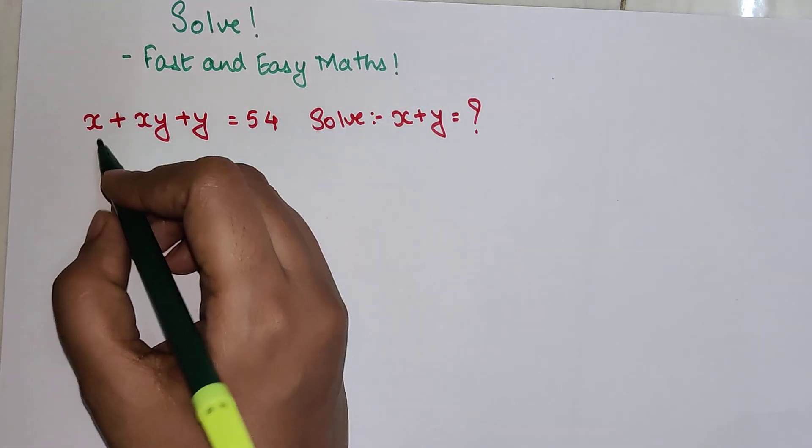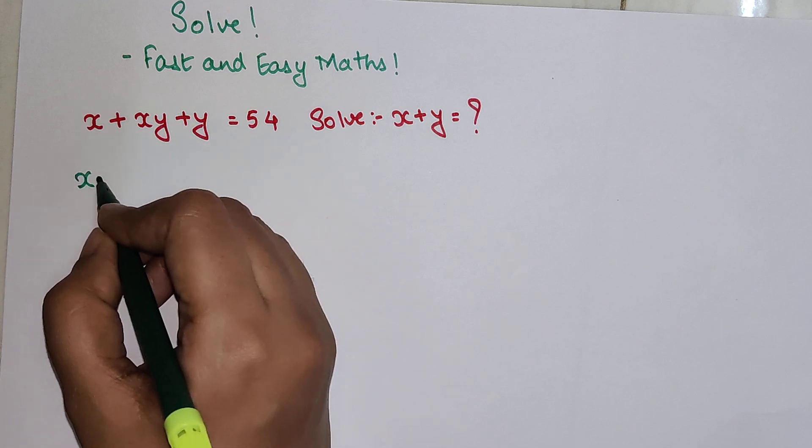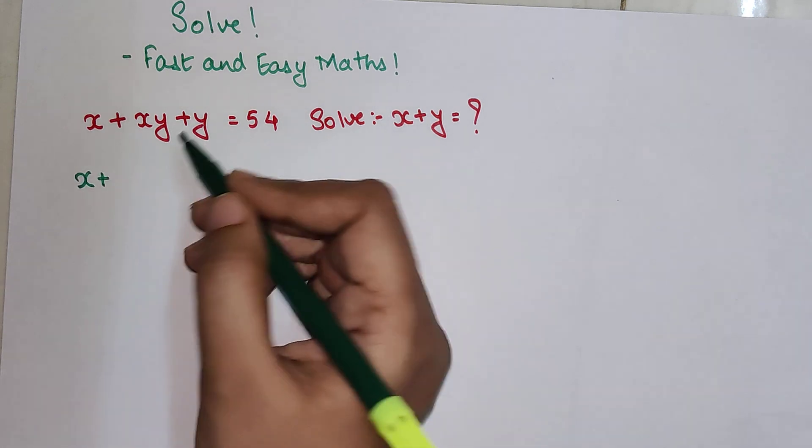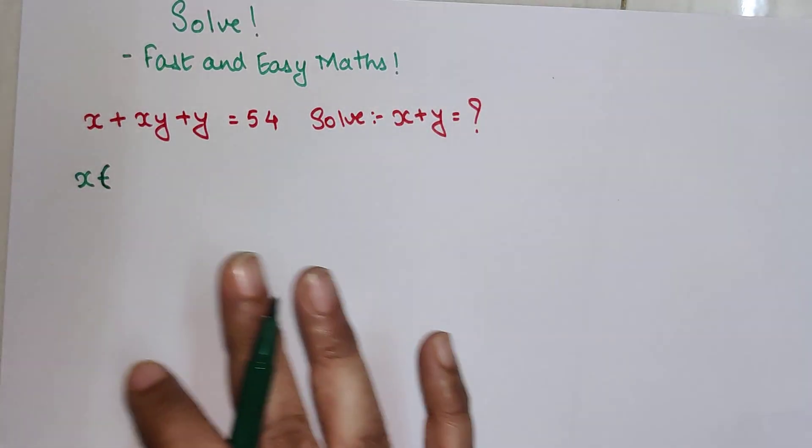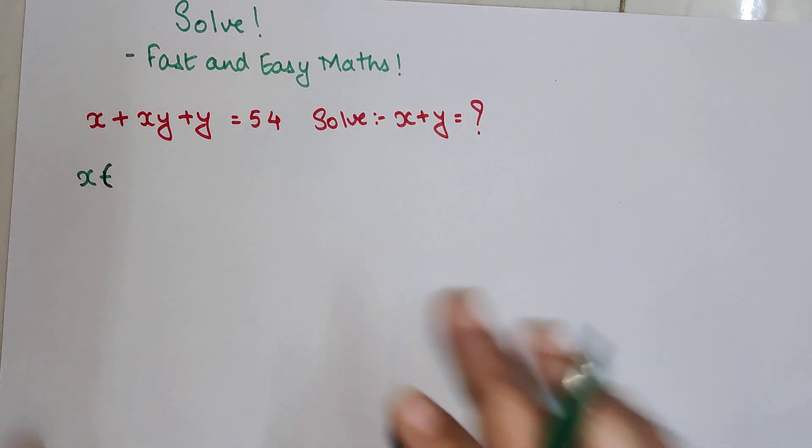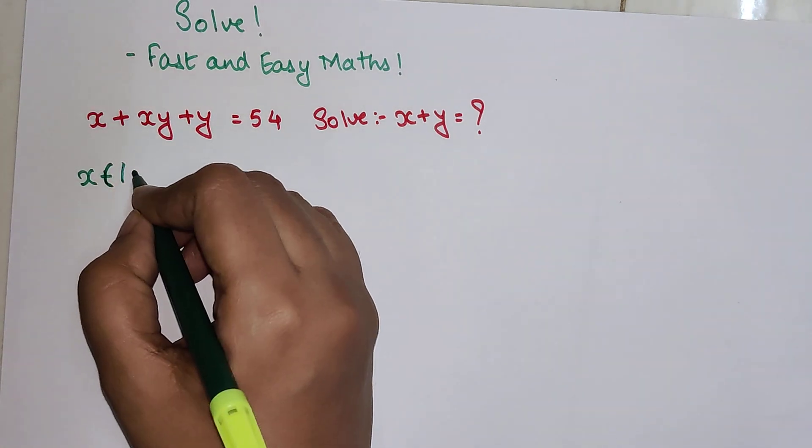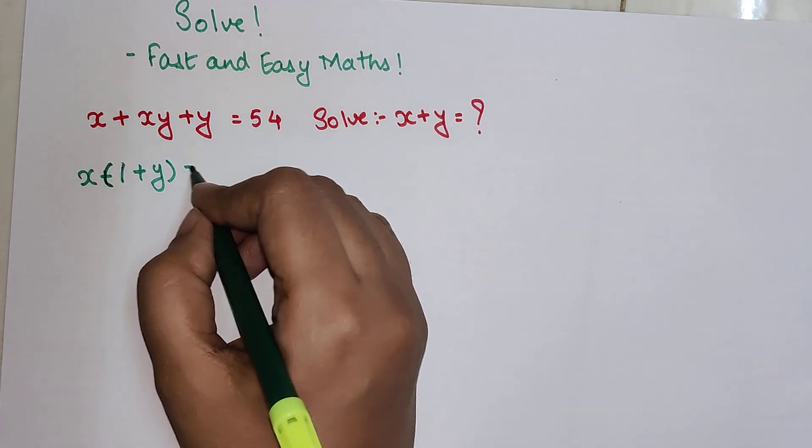So here what we can do is take x common. Let's just do that. The first step we should do is only the step which we know. Very obvious: x(1 + y) + y = 54.